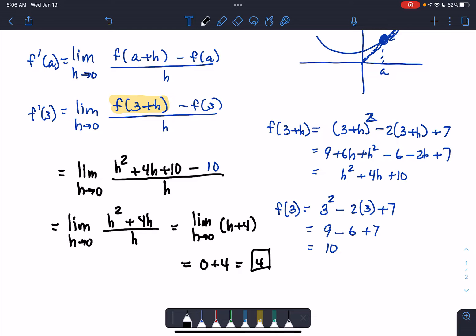So therefore, the slope of the tangent line, which is the instantaneous rate of change of this function is 4, which means if you were to draw the graph of the function and draw the tangent line at x equals 3, it would have a slope of 4.